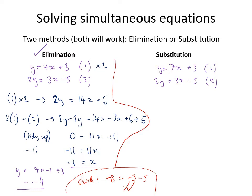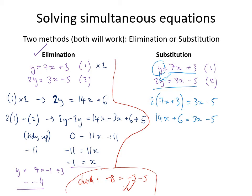Now for substitution. Within equation 2, we substitute y = 7x + 3 (from equation 1) in place of y. This gives 2 × (7x + 3) = 3x − 5. Multiplying out the brackets: 14x + 6 = 3x − 5.